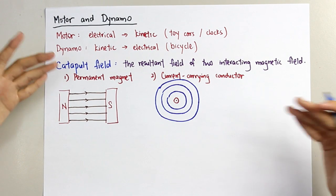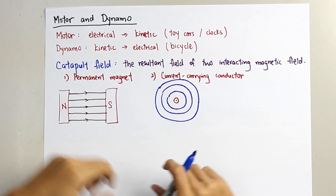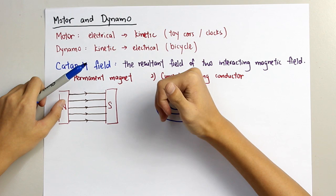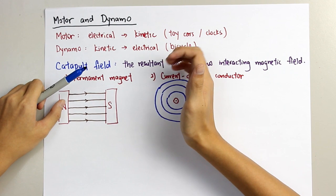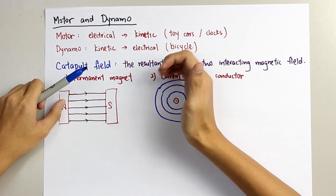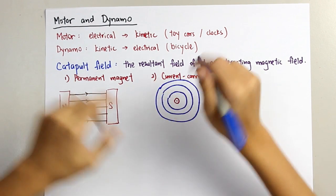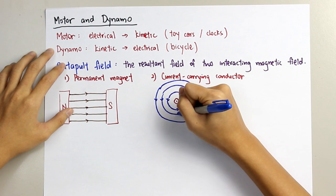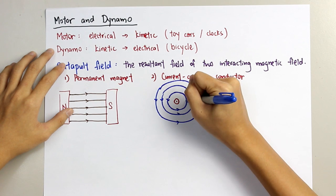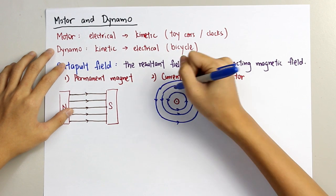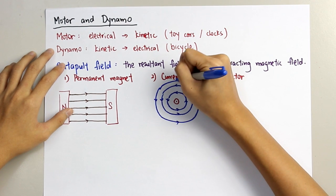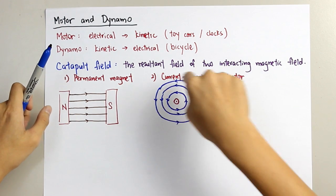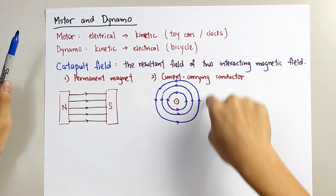We learned before the right-hand grip rule. When the current is moving in this direction, the magnetic field arrows rotate in this direction, going around and back in this direction again. So the magnetic field will be in this direction.